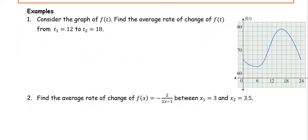Let's see an example. We look at this graph — the graph of f is provided. Find the average rate of change of the function f from t1 equals 12 to t2 equals 18. From the graph, at t1 which is 12, the function value is 74. So f at t1, or f at 12, equals 74.